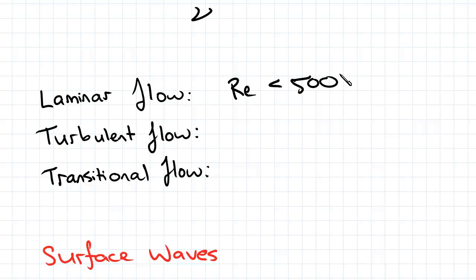For an open channel flow with Re greater than 12,500, the flow is classified as turbulent. This means the flow is fast with streamlines that thrash about.